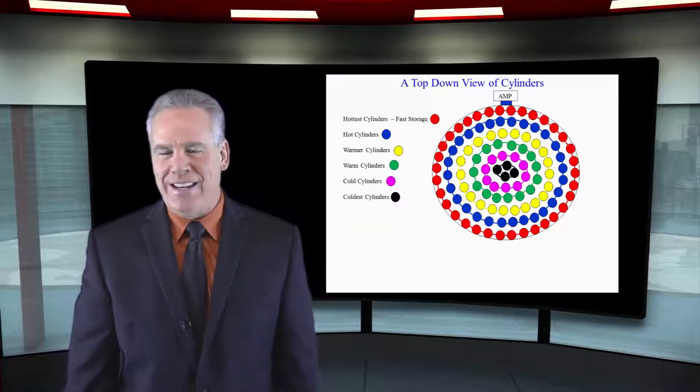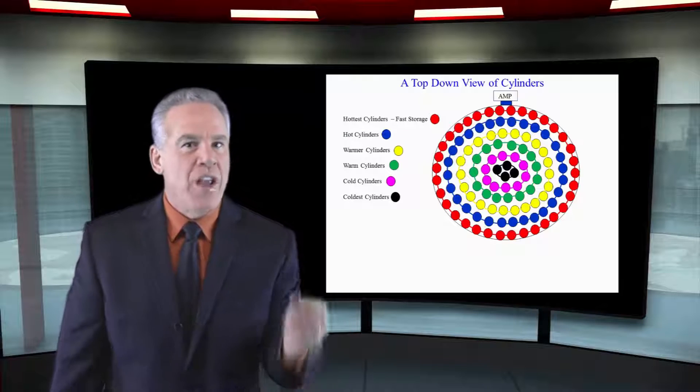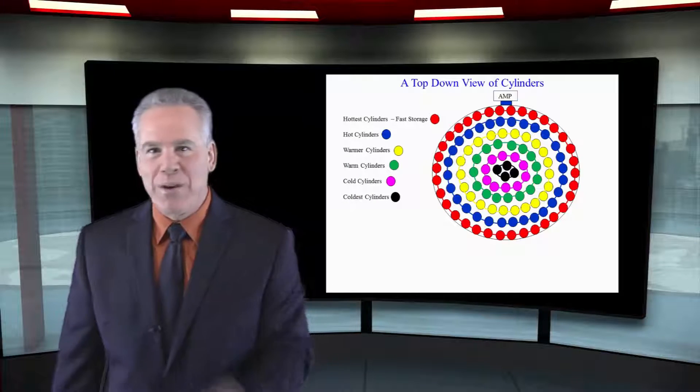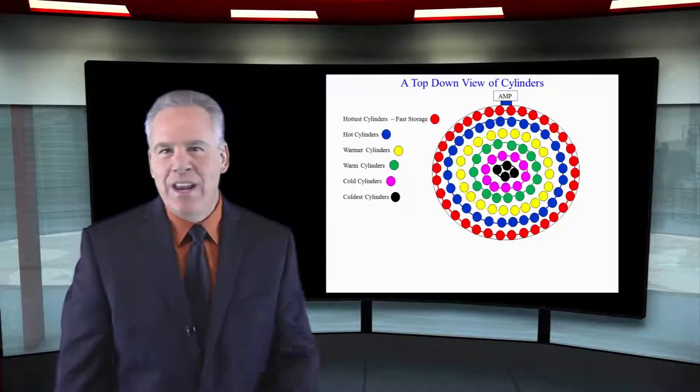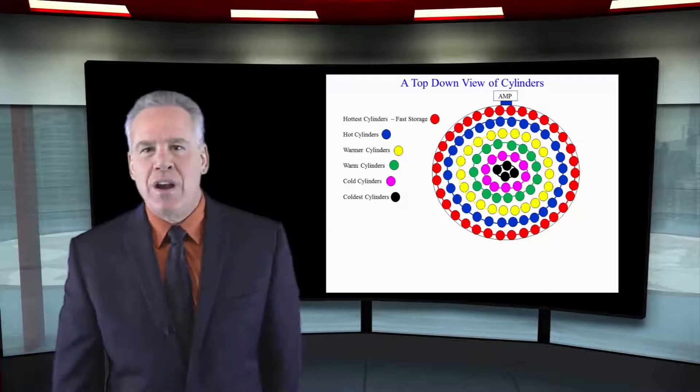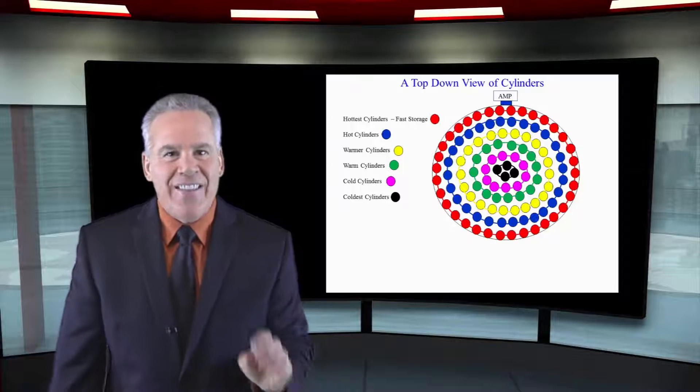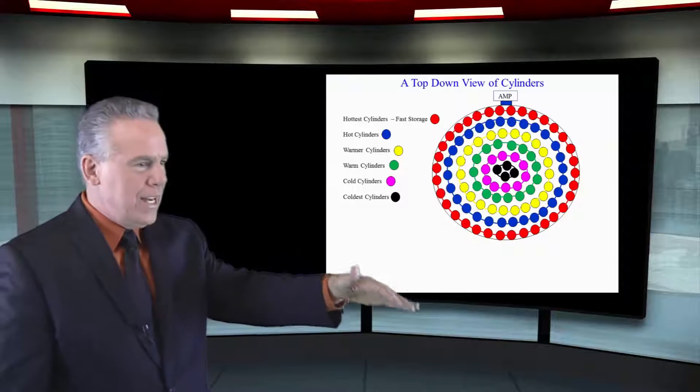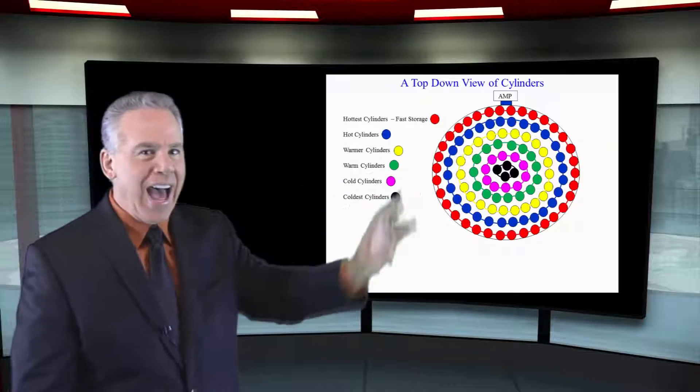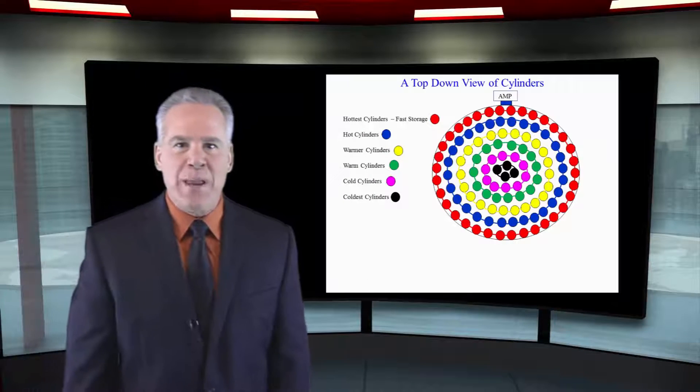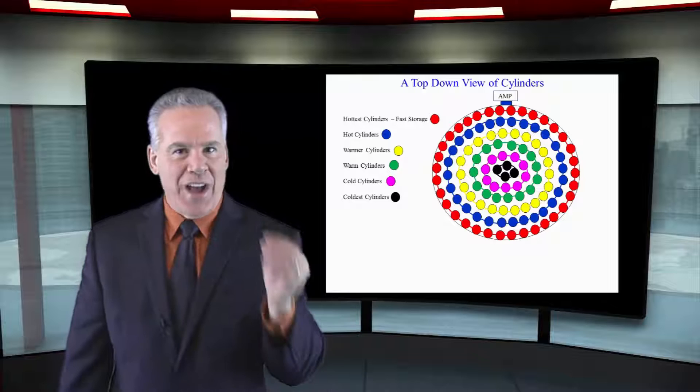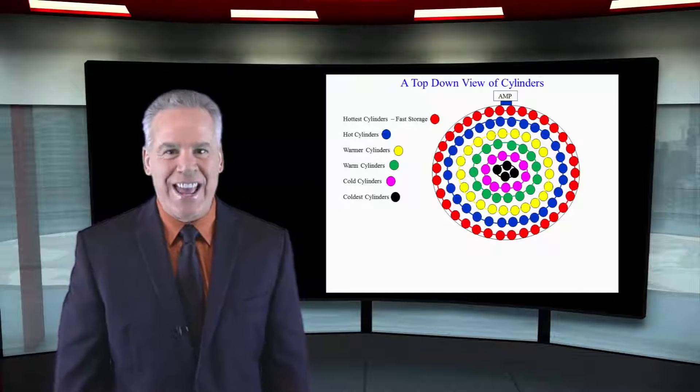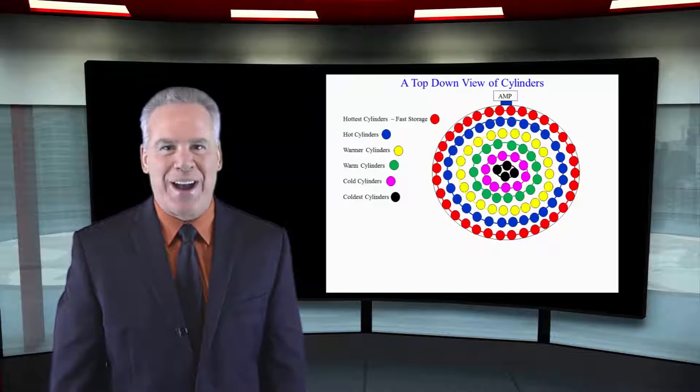So what Teradata does, which is ingenious, they track which tables are being queried the most and they give that a hot temperature. They track which tables are queried the least and that's going to get a cold temperature. So they got cold and medium and warm and hot and very hot. They put the data that is the hottest on the outside cylinders because those are the fastest. And that's going to save you some time.